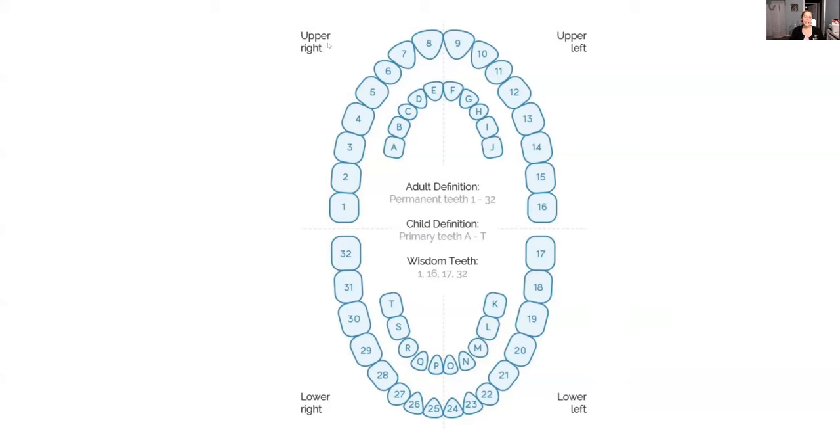The upper right is quad one. The upper left is quad two. The lower left is quad three. The lower right is quad four. And how you want to be looking at this is if your patient was the other way around. So your patient's upper right side, upper left side, lower left, lower right.